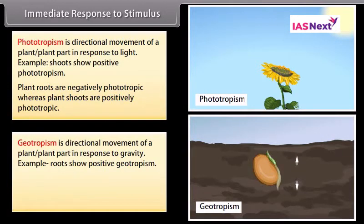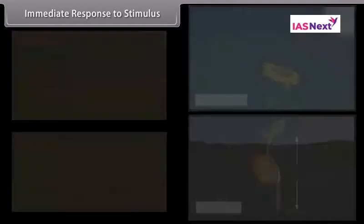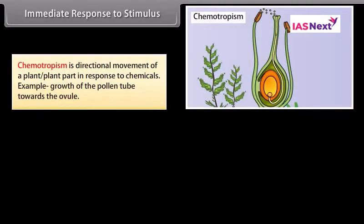Geotropism is the directional movement of a plant part in response to gravity. Roots show positive geotropism, whereas plant shoots are usually negatively geotropic. Chemotropism is the directional movement of a plant part in response to chemicals. Example: growth of the pollen tube towards the ovule.